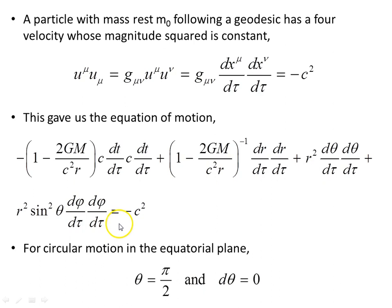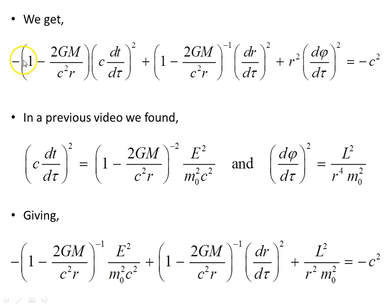For circular motion in the equatorial plane, we're going to set theta as pi over 2, so sine of theta equals 1, and d-theta d-tau will be 0. When we substitute that in, we get our equation reduced down. In a previous video we found, using Killing vectors, an expression for the energy of the particle and an expression for the angular momentum of the particle. When we substitute these in, that further reduces our equation of motion to this.